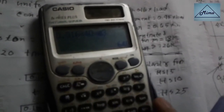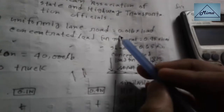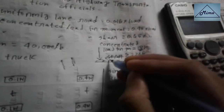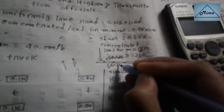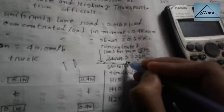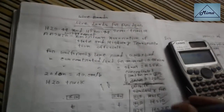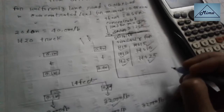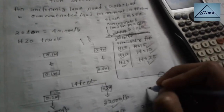For the uniform lane load, it is 0.016 times 40,000, which equals 640 pounds per foot. So the uniform load for H20 lane loading is 640 pounds per foot. Similarly, the same approach applies for H15, H10, H25, HS15, HS10, and HS25. Thank you — I hope you understand. If there's any confusion, let me know in the comment section.